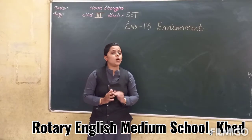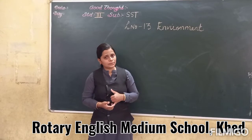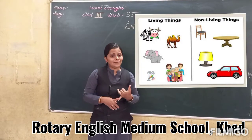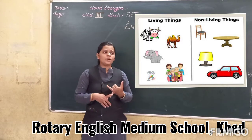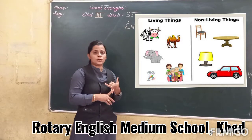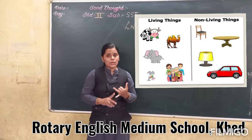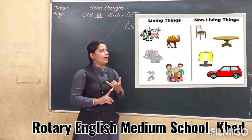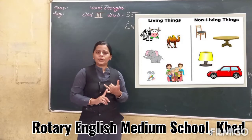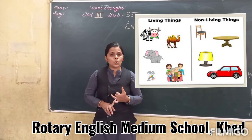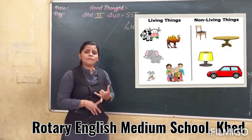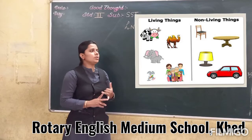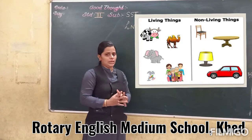I hope you know the meaning of living and non-living. What is a living thing? A living thing requires air, food, and water to live. And a non-living thing does not require air, water, or food to live. So what forms an environment? Living and non-living — both form an environment.